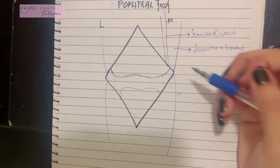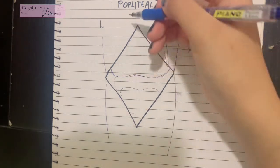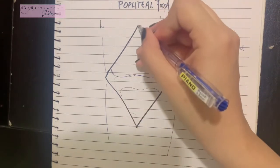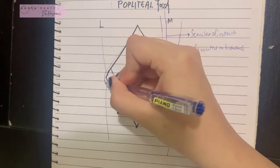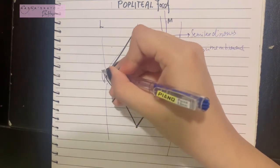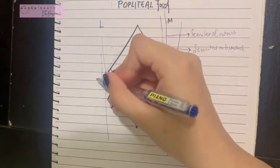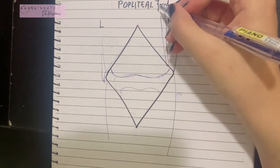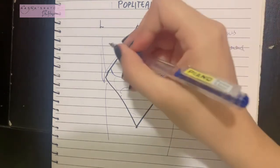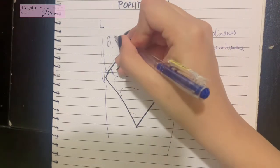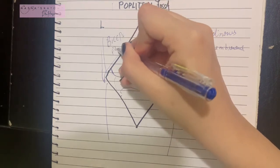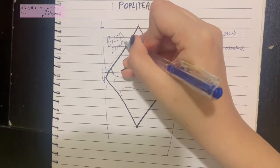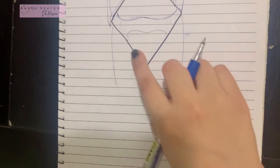The supralateral boundary is formed by the biceps femoris. The biceps femoris originates from the ischial tuberosity and inserts onto the head of the fibula, going laterally. So the biceps femoris forms the supralateral boundary of the popliteal fossa.